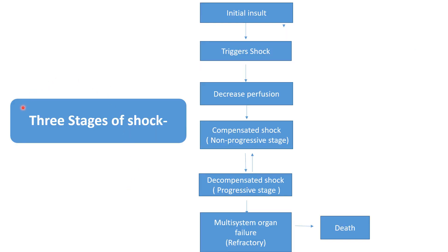There are basically three stages of shock. Whenever there is an initial insult — for example, if the patient is having diarrhea and vomiting, the patient will develop dehydration and then slowly develop hypovolemic shock — or if the patient is having anaphylaxis, that initial insult will trigger the shock. The patient will develop decreased perfusion and decreased oxygen supply to the tissue, leading to the compensated or non-progressive stage. We have to treat either in the compensated stage or before this.